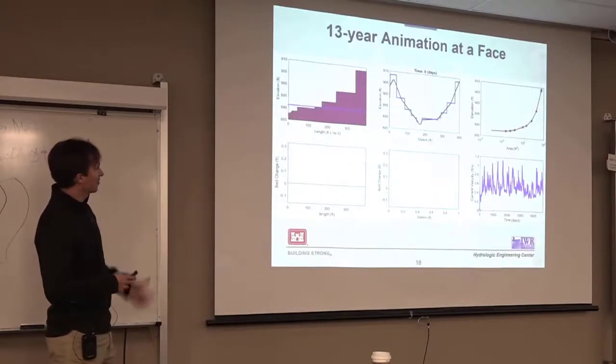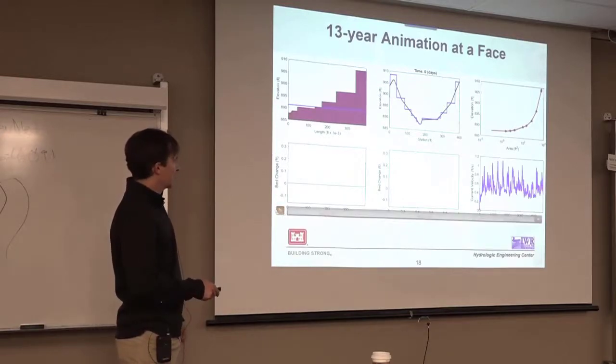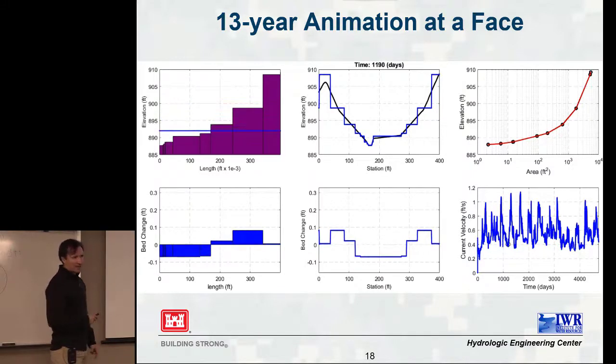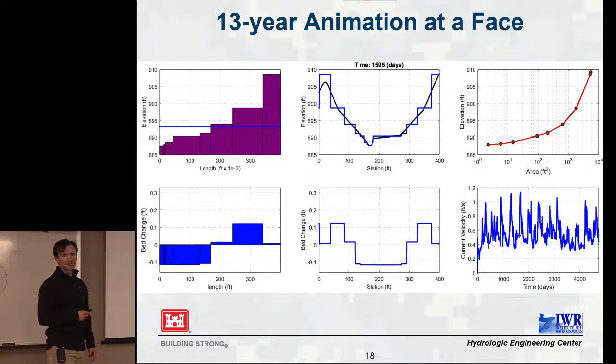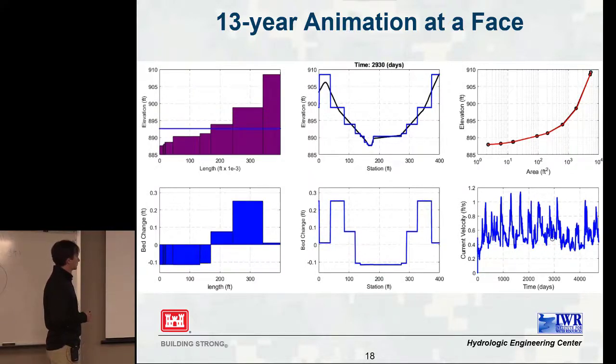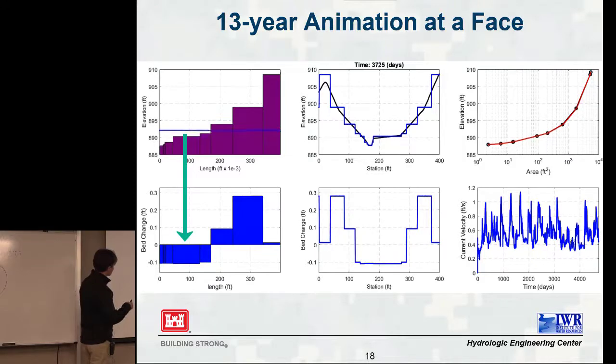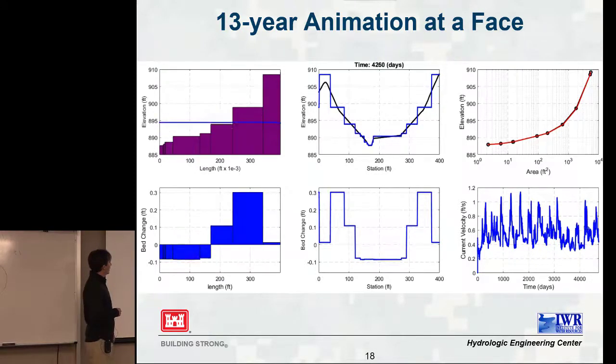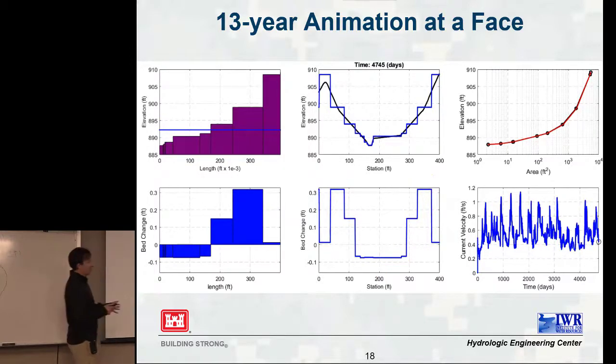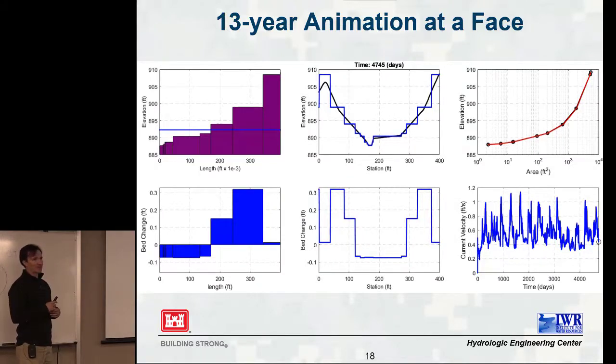And the next slide, this is going to animate kind of those same figures, and this is a cross-section average velocity for that cross-section, for that face. I believe I ran 10 years, something like that. 5,000 days. And so you see that it's only modifying the pieces of the terrain that are below the water surface. And it does capture that general behavior of eroding in the center of the channel and depositing in the banks. It's not perfect. My hydraulic calibration for this was actually not great. That's why I haven't published this.